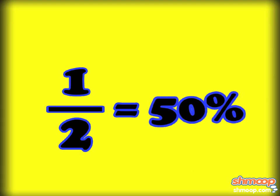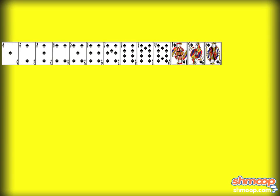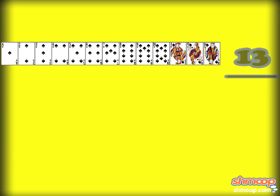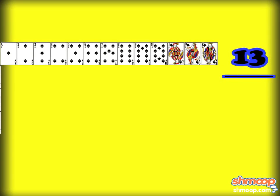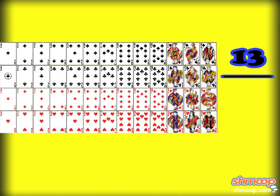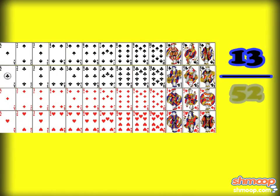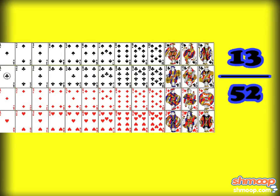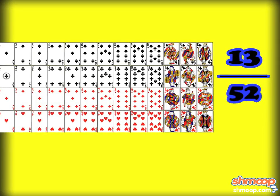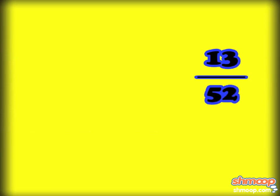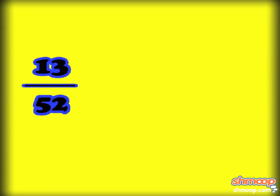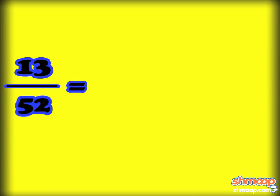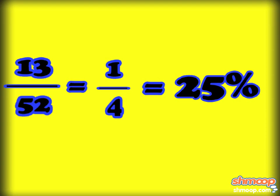That's 50%. However, for the Joker, there are 13 spades in a deck, so we put 13 in the numerator. And there are 52 possible cards he might choose, so we put 52 in the denominator, which means that the Joker only had a 25% chance of being villainous.